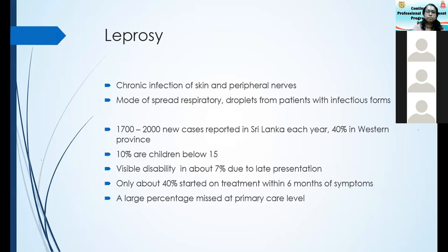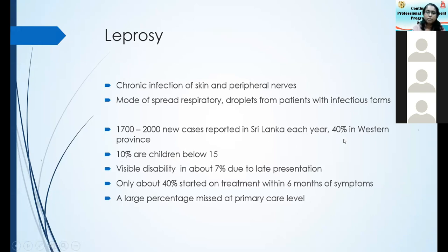Why is leprosy important to us? Leprosy is a chronic infection of the skin and peripheral nerves. Because of this peripheral nerve involvement, leprosy is a problem. Remember the mode of spread is respiratory — you don't need gloves to touch a patient with leprosy. Last year we had over 1700 new cases reported. Forty percent are in the Western Province, 10 percent are children below 15 years, and visible disability is seen in 7 percent — due to late presentation. Only about 40 percent have started treatment within six months of symptom onset, meaning a large percentage are being missed at the primary care level.